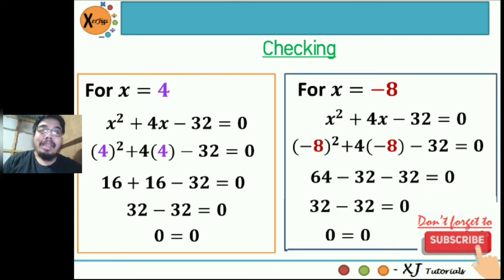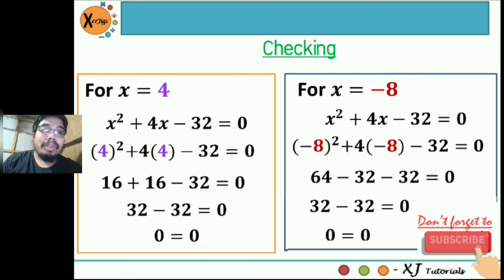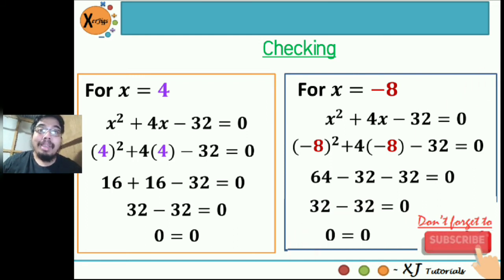For x equal to negative 8, substitute into the original equation: x squared plus 4x minus 32 equals 0. That gives negative 8 squared plus 4 times negative 8 minus 32 equals 0. Negative 8 squared is 64, and 4 times negative 8 is negative 32. So 64 minus 32 minus 32 equals 0, which is 32 minus 32 equals 0. So 0 equals 0 — this is also a solution. Therefore, both solutions are valid.